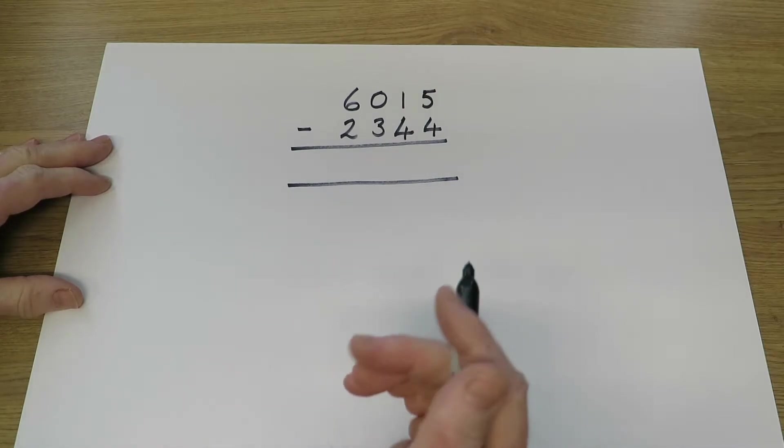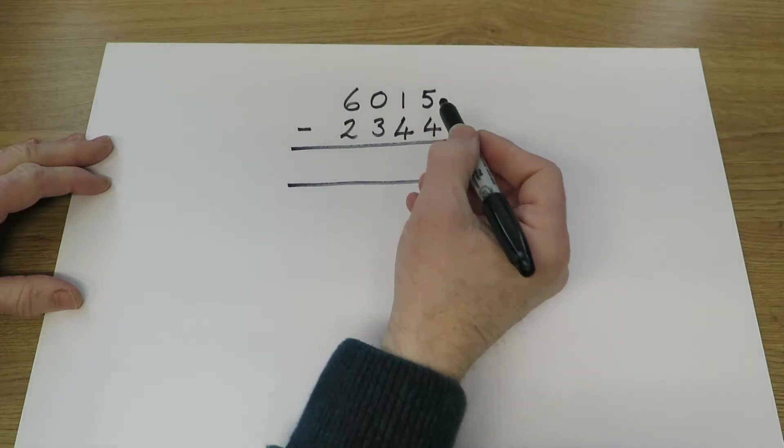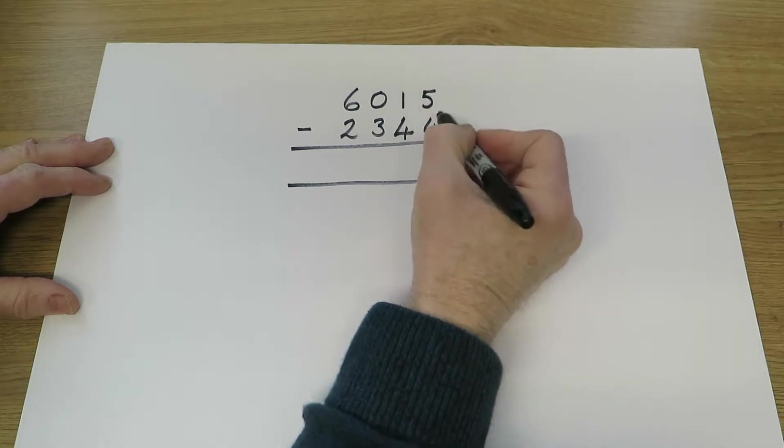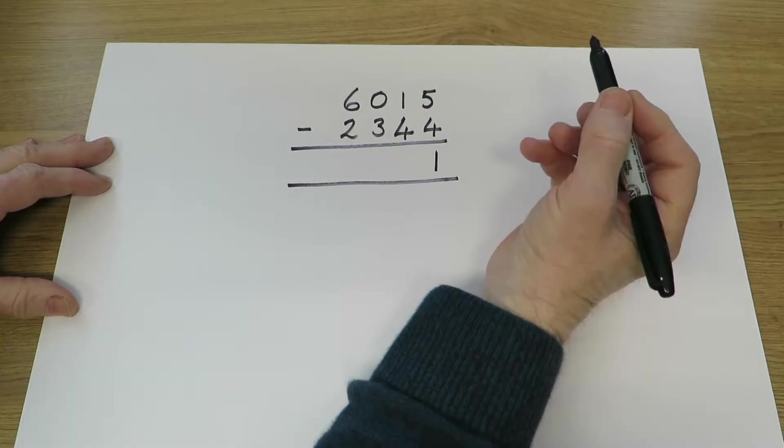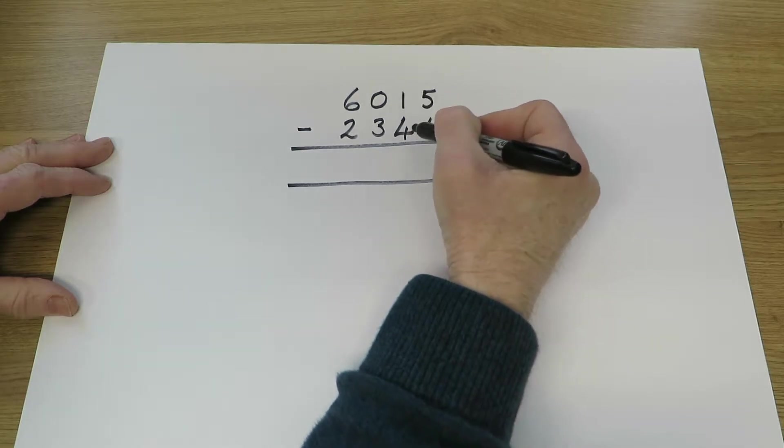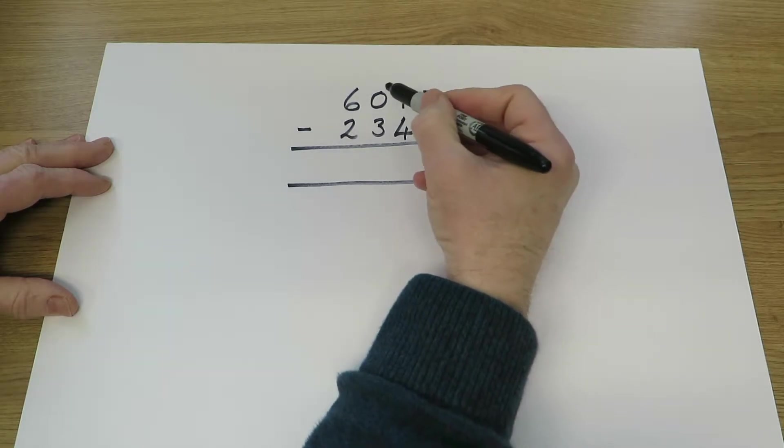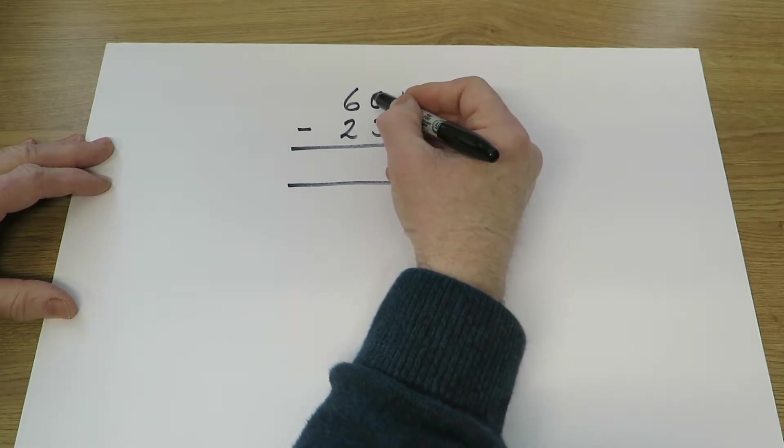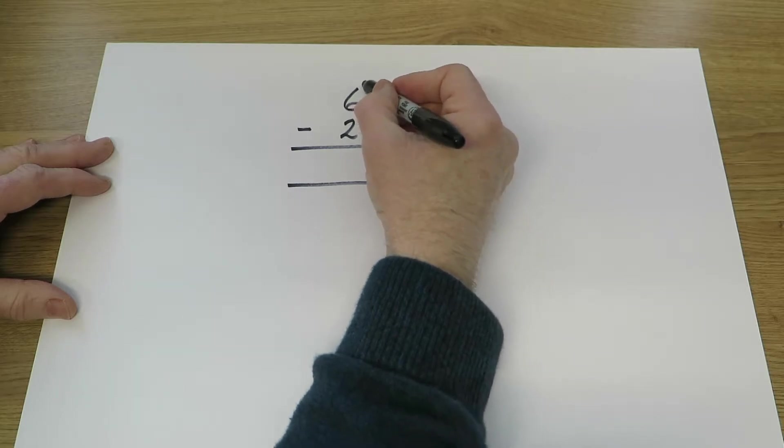Some questions present greater difficulties. If you look at this example involving four-digit numbers, again, starting at the units, 5 take away 4 is 1 unit. But now we're coming to the tens. 1 ten take away 4 tens. We haven't got enough tens. We haven't got any hundreds that we can use to make tens, so we need to make some hundreds first by using one of the thousands.